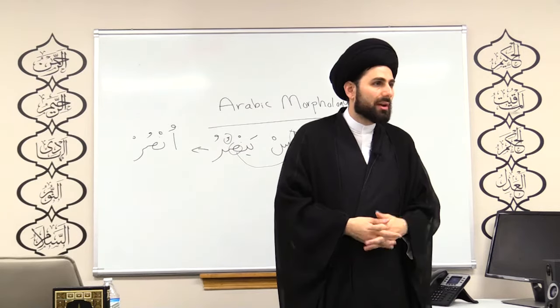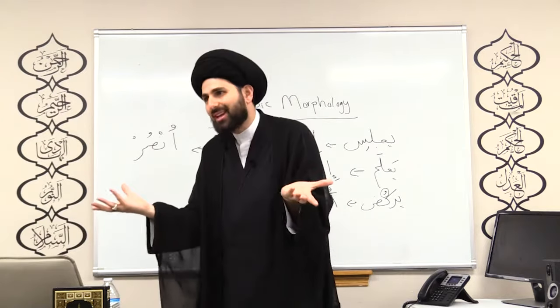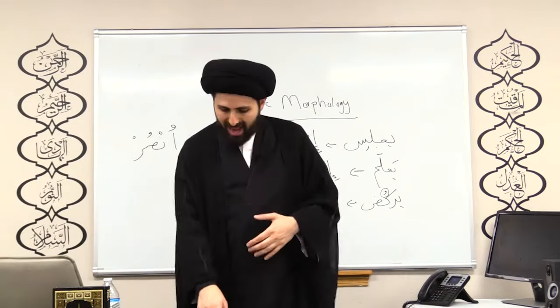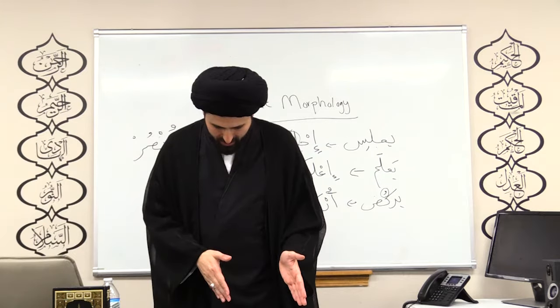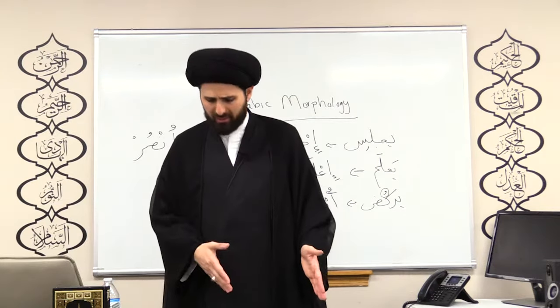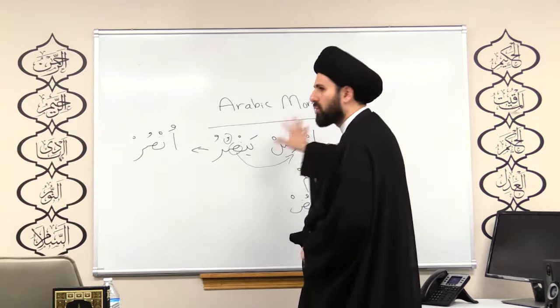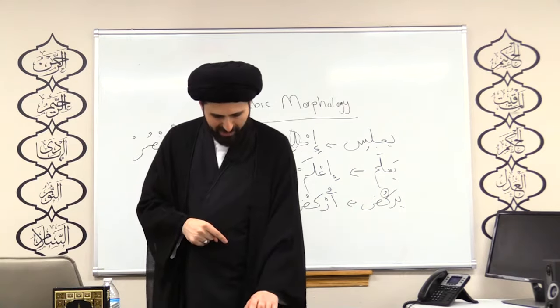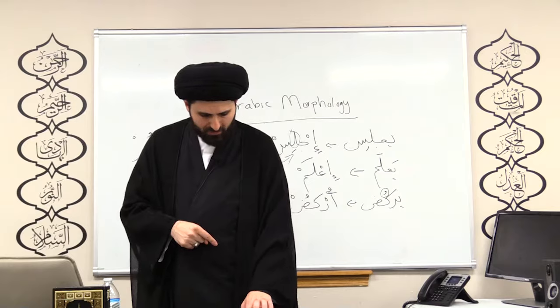The table on page 37 shows how to get to fi'l al-amr step by step. You do not need to confuse yourself with each step — as long as you can follow what was shown on the board. Just look at the last column on the left, which shows the six forms: if'al, if'ala, if'alu, if'ali, if'ala, if'alna. Keep those in mind.